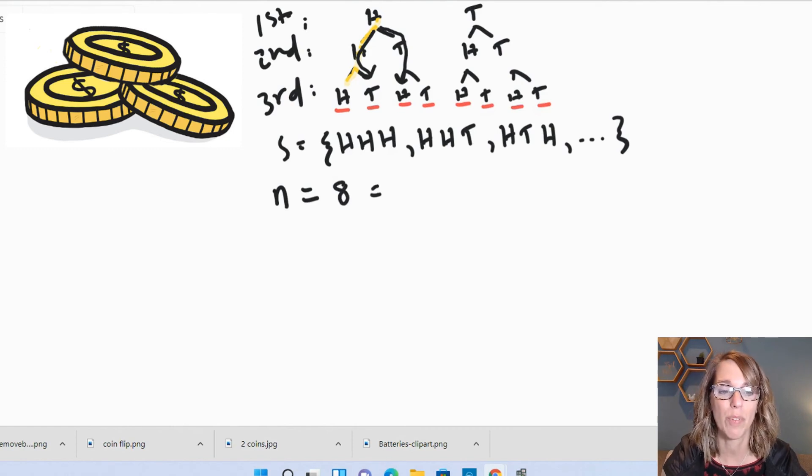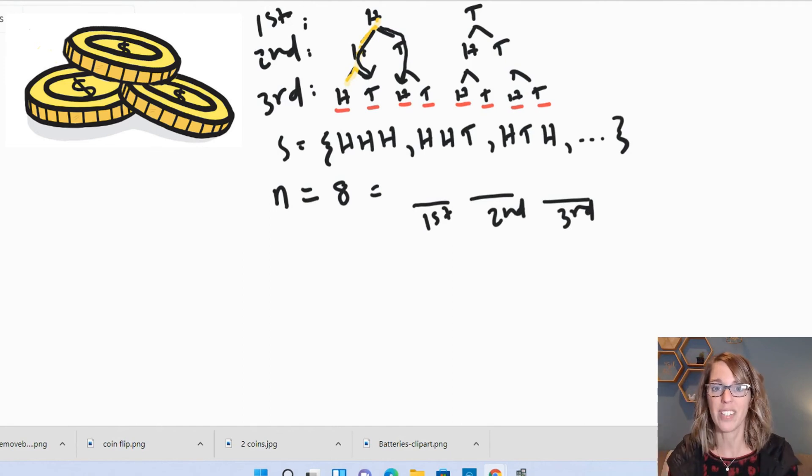You can also do this with the multiplication rule. I've got three different events. Remember, I've got the first coin, the second coin, and the third coin. We call this a multiplication principle. But I can multiply the outcomes together because it builds the branches in my tree diagram. So this is going to be two times two times two. You multiply that together and you get that same number in the sample space, which was eight.